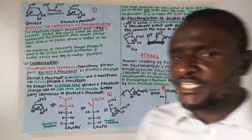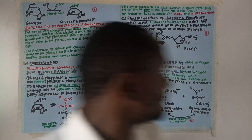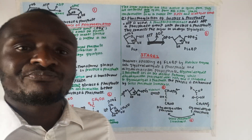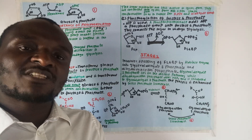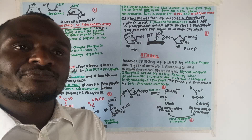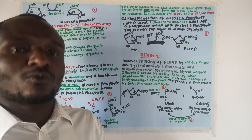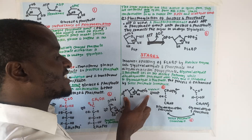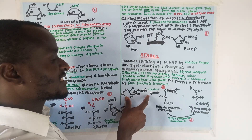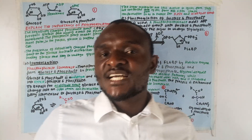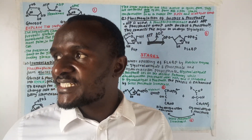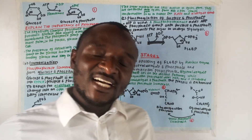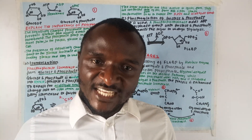Stage number two involves splitting of fructose-1,6-bisphosphate by aldolase enzyme. Fructose-1,6-bisphosphate is a bilateral molecule — it can easily be split into two equal parts. Aldolase enzyme splits fructose-1,6-bisphosphate into dihydroxyacetone phosphate (DHAP) and glyceraldehyde-3-phosphate. DHAP does not lie on the direct glycolysis pathway and has to be converted into another molecule of glyceraldehyde-3-phosphate.